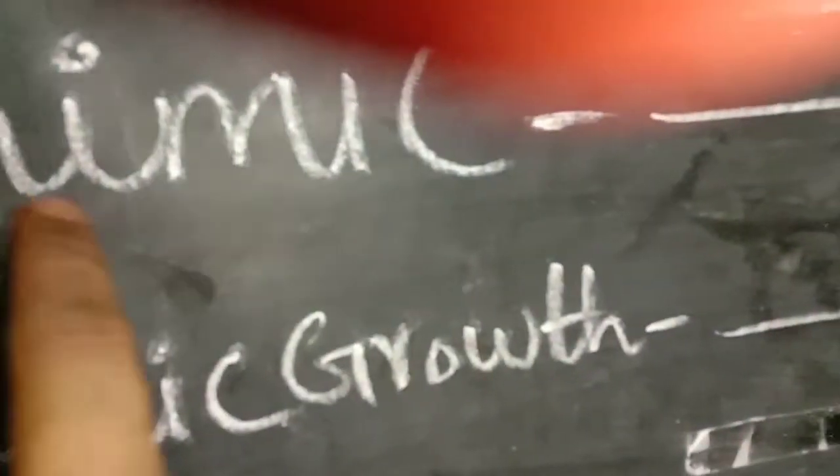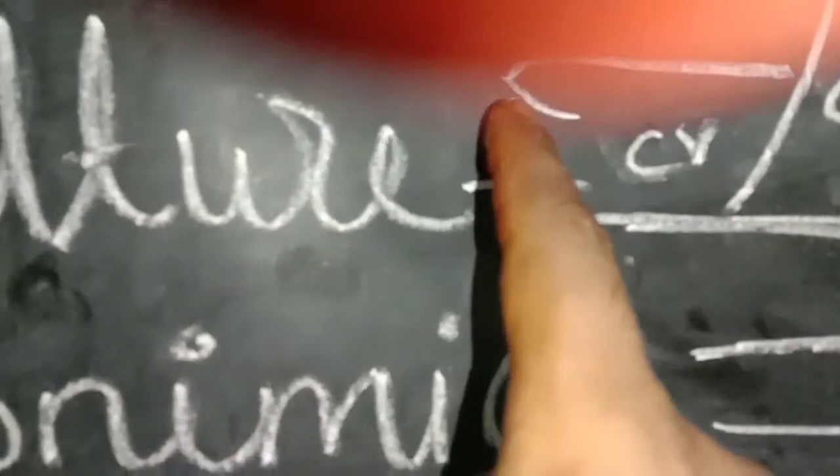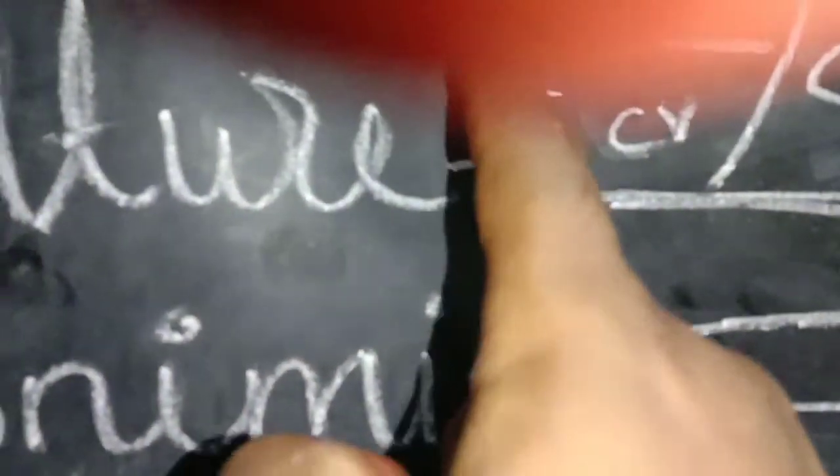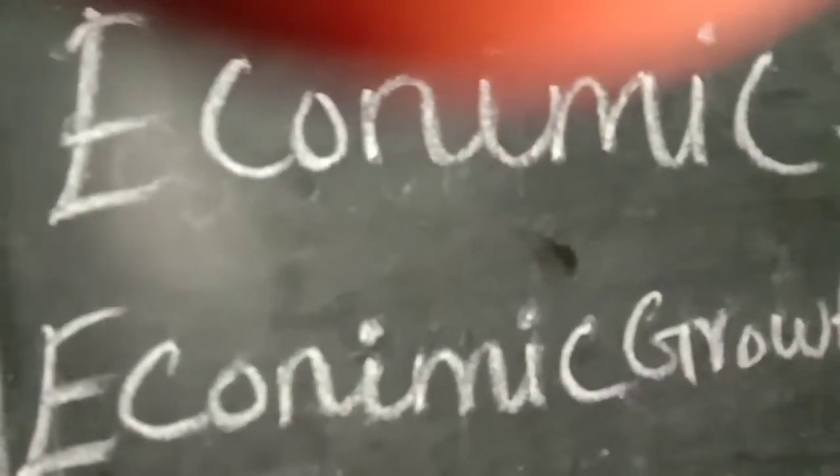This is C and N. This is R and C. This is C and C. This is Economic Growth. This is G and T. This is Economic Growth.